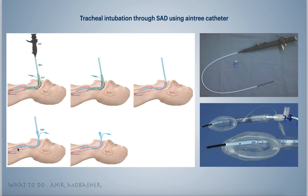The last step is to feed the endotracheal tube through the Aintree catheter, but you must do this step under vision — not blindly. Doing it blindly is not safe for the patient. Use direct or video laryngoscopy and see with your own eyes the tube sliding inside the airway over the Aintree catheter. Then remove the catheter and we have the endotracheal tube successfully inside the airway.